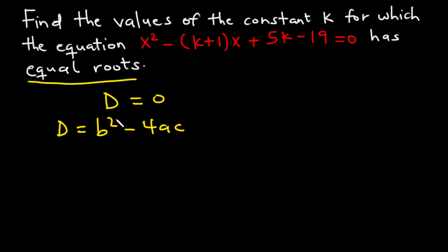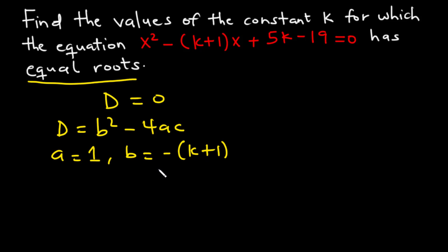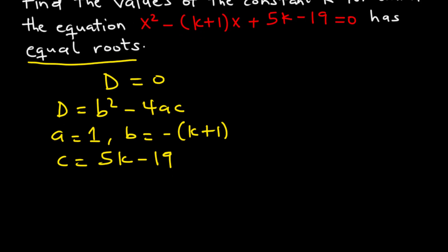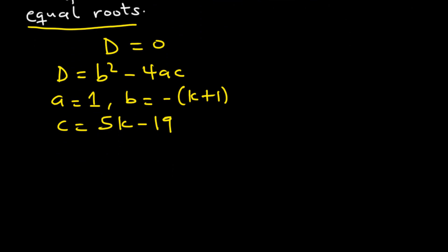From the equation, a is equal to 1, b is equal to negative bracket k plus 1, and c is equal to 5k minus 19.